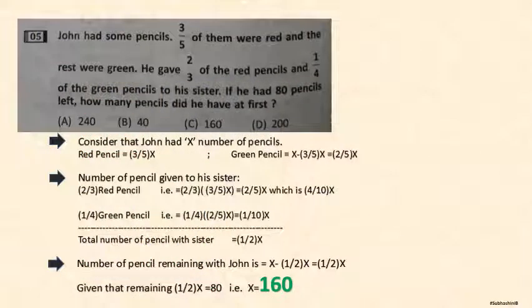Here they have mentioned John had some pencils. Let's take it as x. In that 3 by 5 of x is red. The remaining is 2 by 5. So 2 by 5 of x is green. He gives some set of pencils to his sister. Let's take 2 by 3 of 3 by 5 of x red pencils given to sister. Next one is 1 by 4 of 2 by 5 of x of green pencils is given to his sister. Total number of pencils with his sister is half of x. They have given like John is having 80 pencils left out after giving to his sister. So the actual number is x. So x minus half of x is equal to 80. This is nothing but half of x is equal to 80 and x, the total number of pencils which John had, is equal to 160.